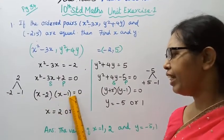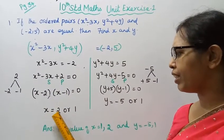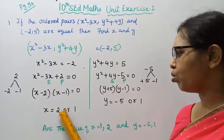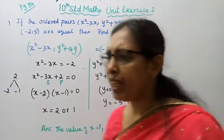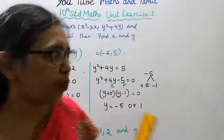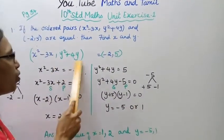Directly, x is equal to 2 or x is equal to 1. Now moving to the y equation: y²+4y is equal to 5.